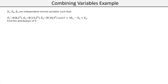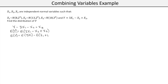To find the distribution of Y we need both E(Y) and Var(Y). Taking expectations of both sides: E(Y) = E(3X1) − E(X2) + E(X3). Bringing the coefficient outside: 3·E(X1) − E(X2) + E(X3). Substituting: 3×8 − 13 + 18 = 29. So the expectation of Y is 29.